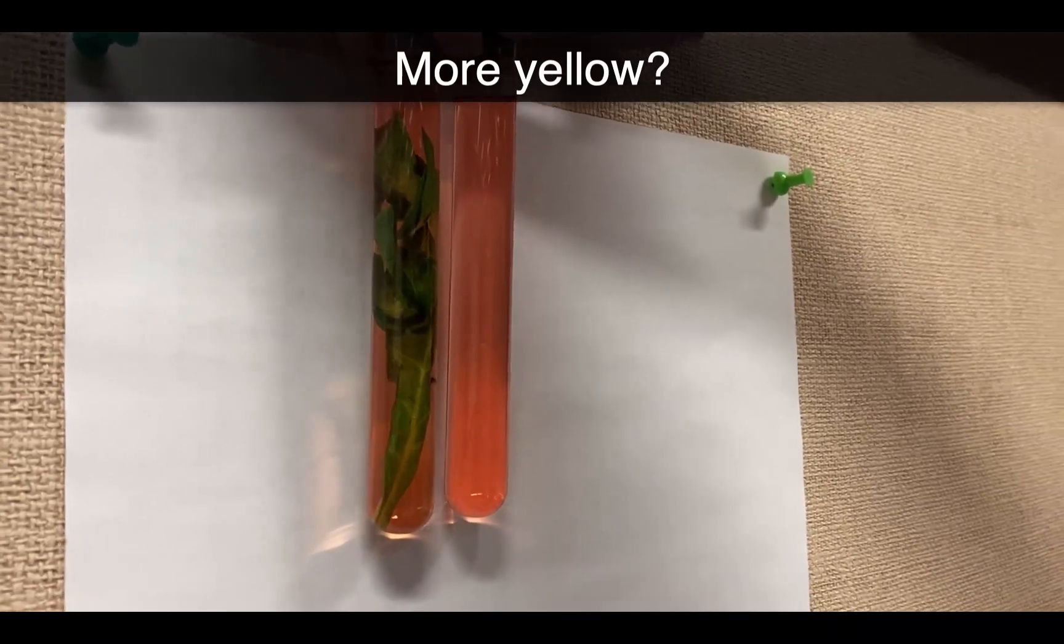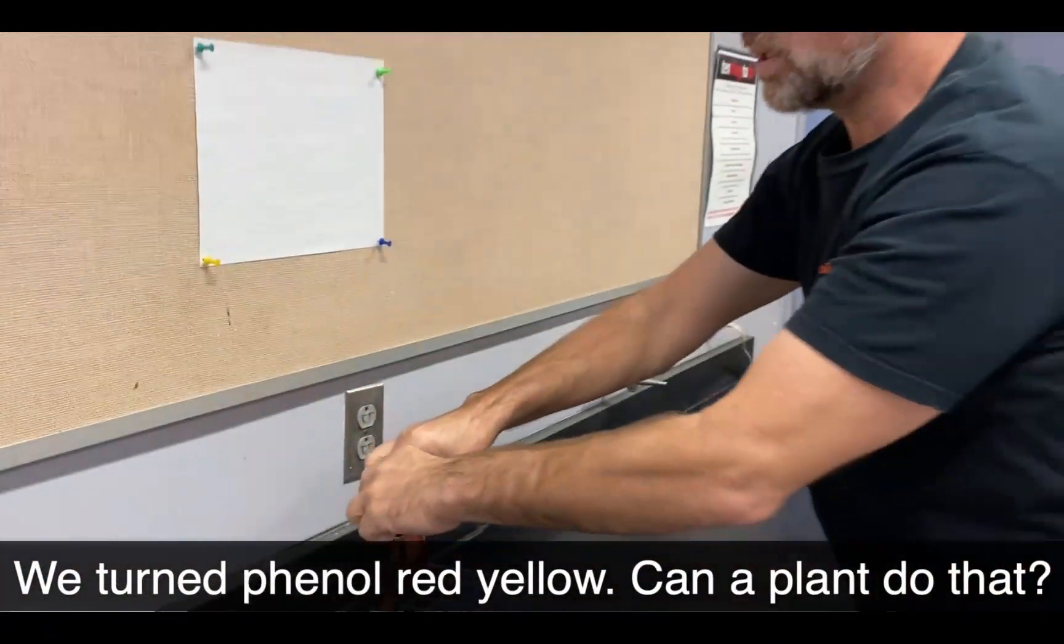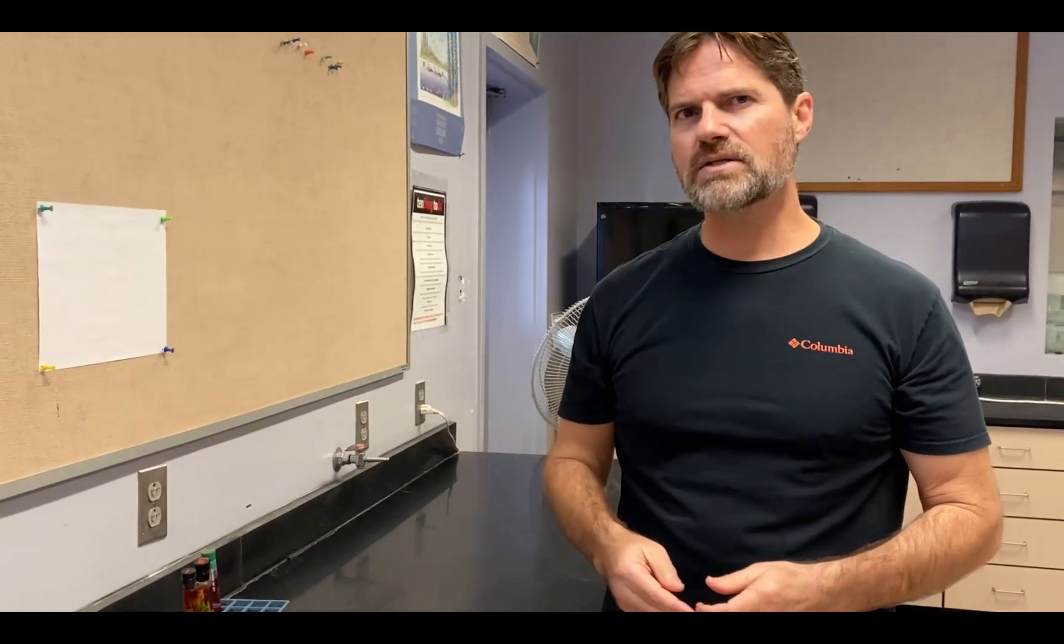That's an interesting result. Tube number two was out in the sun with all the other tubes, but it was inside a photoblocker so it wasn't able to receive the light energy that fuels photosynthesis. Yet we saw it turn yellow.